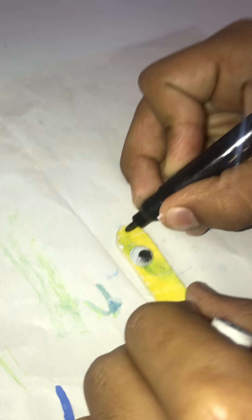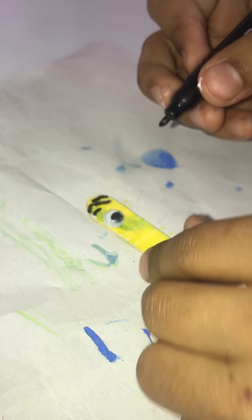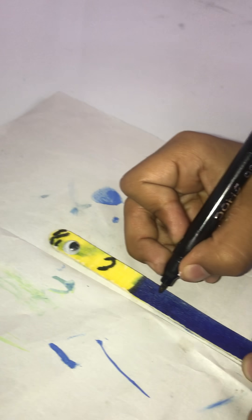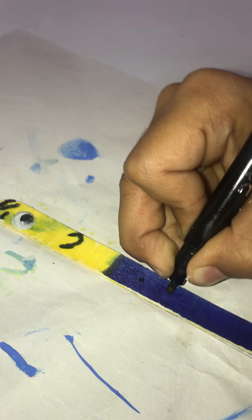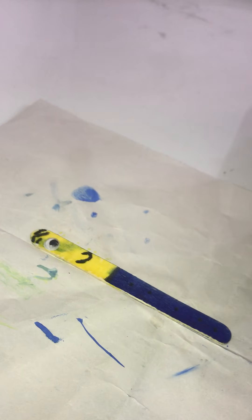Look. Now we have to make some hair and one smile. Oh yes, and don't forget to make the buttons of his dress. Now our Minion is ready.